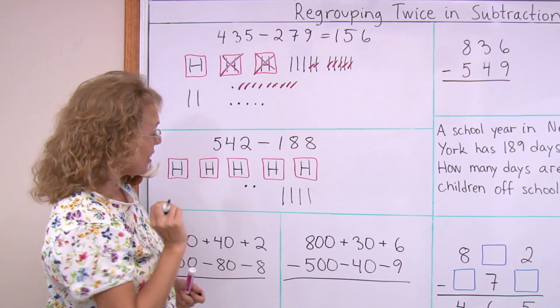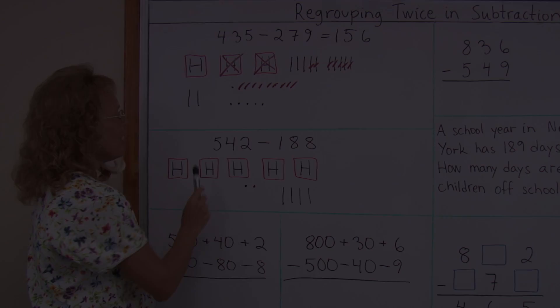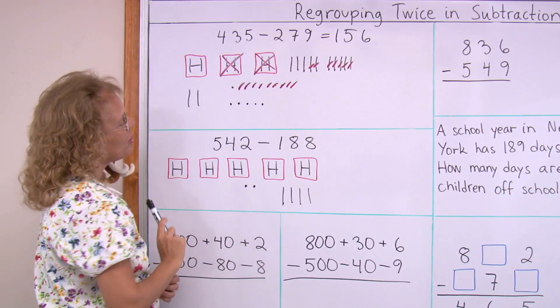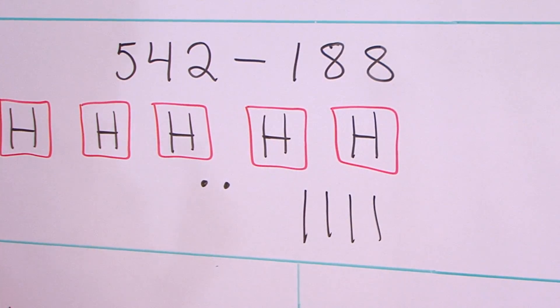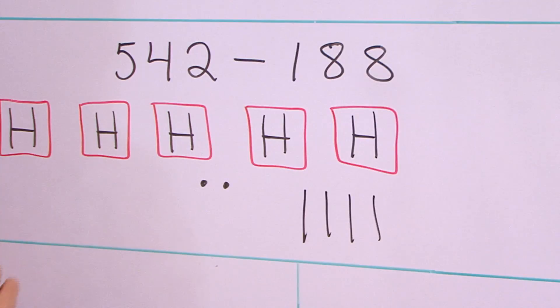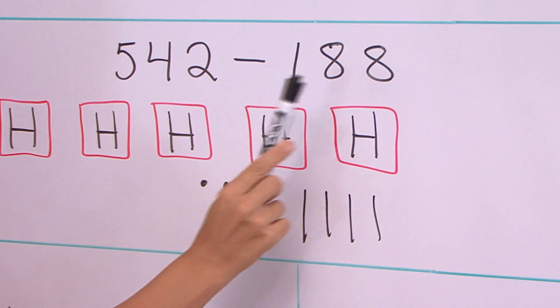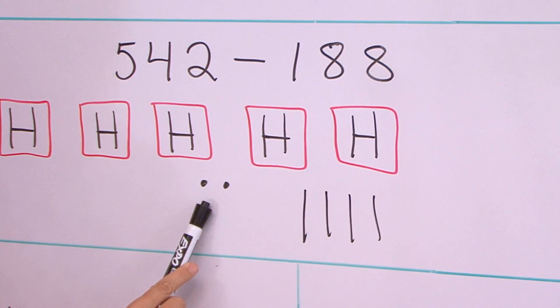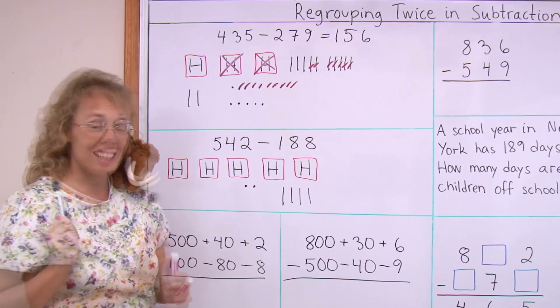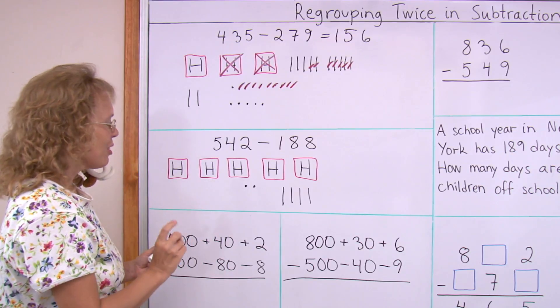Let's do it one more time. Five hundred forty-two minus one hundred eighty-eight. Here's my five hundred forty-two. And I would need to take away eight ones and eight tens. I can't do either. So I do the same thing.